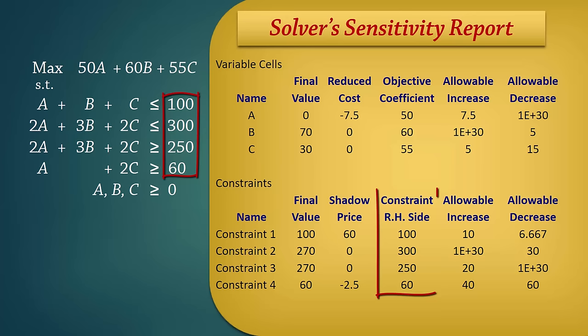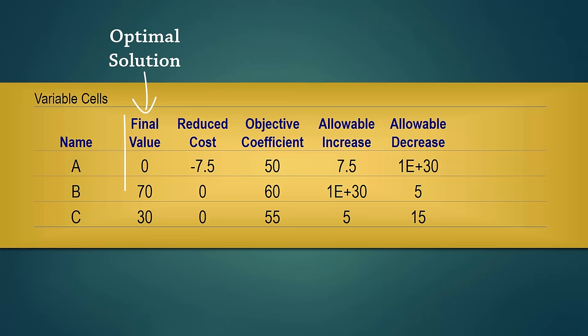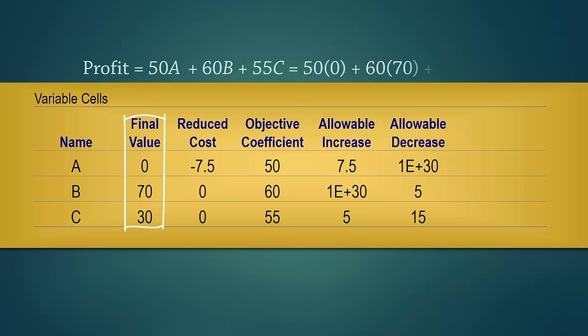Let's begin by examining the top part of the table for optimality ranges. The optimal solution is represented by final values here. A equals 0, B equals 70, and C equals 30. So the optimal objective function value can be found by plugging the optimal solution into the objective function to obtain 5850.